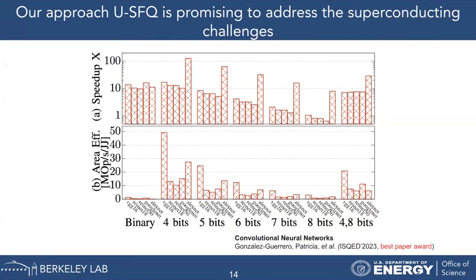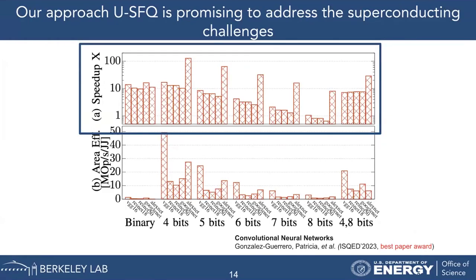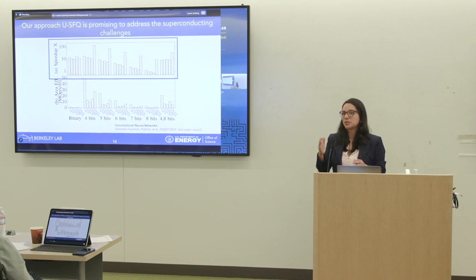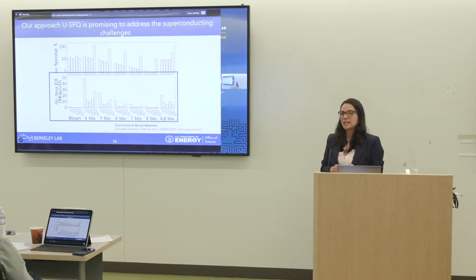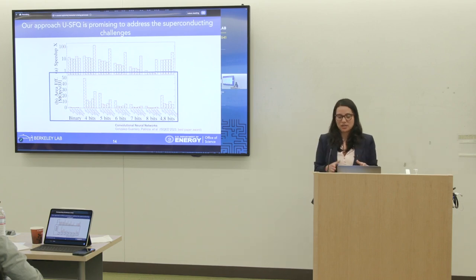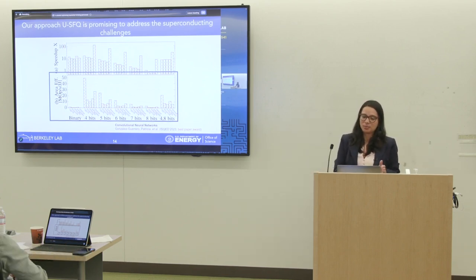To evaluate my approach against CMOS, the y-axis shows speedup versus number of bits — I can reach up to 10 times speedup, sometimes a little better. Plotting area efficiency versus number of bits, my approach reaches up to 50 mega-operations per second per JJ, while the binary approach achieves less than one operation per JJ. This shows that Unary Computing is tackling the big challenge of superconducting computing.